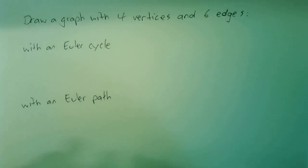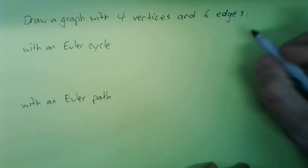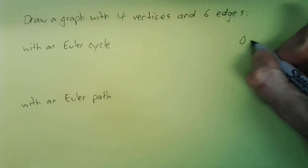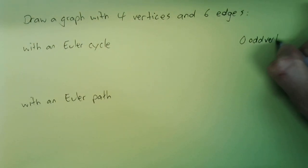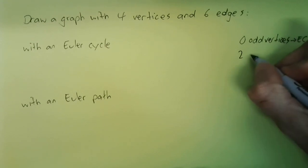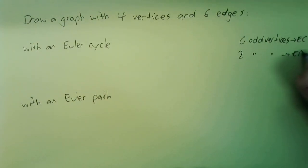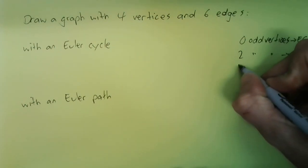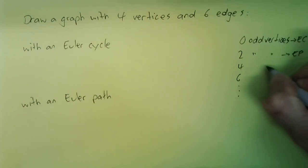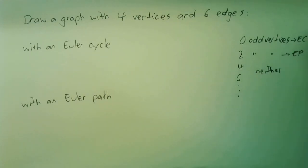Now we're going to try and draw a graph with four vertices and six edges that has an Euler cycle. First, we need to know what has an Euler cycle. If you've got no odd vertices, you get an Euler cycle. If you've got two odd vertices, you'll get an Euler path. And if you've got four, six, etc., you've got neither an Euler cycle nor an Euler path.